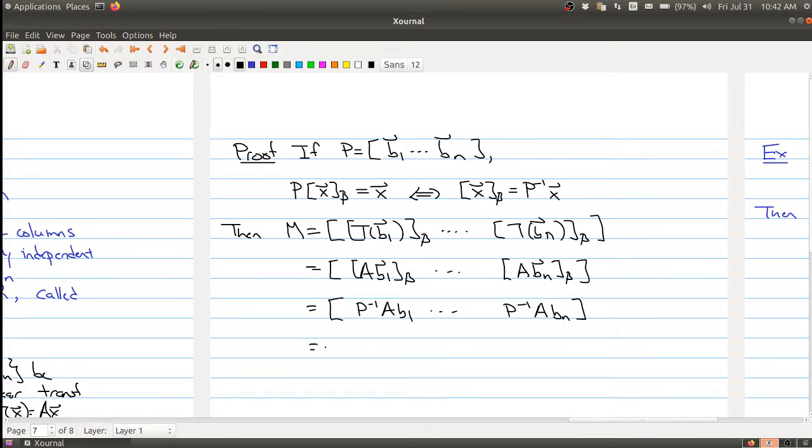And now I can pull out a P inverse and A from this. So this is the same thing as P inverse A times the matrix P, B1 up to BN. But this matrix here with the columns B1 through BN, it's simply the matrix P, right?